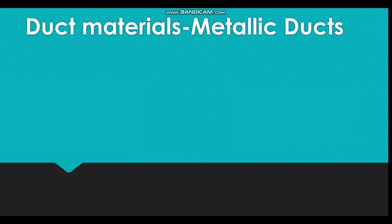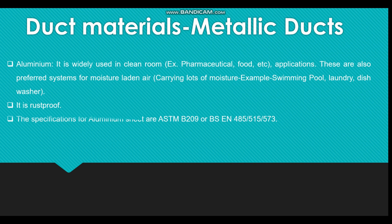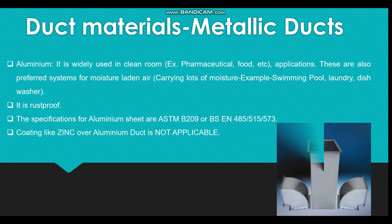The next duct mostly used in HVAC systems is the aluminium duct. It is widely used in clean rooms — for example, pharmaceutical and food applications. These are also preferred for moisture areas such as swimming pools, laundry areas, and dishwasher applications. It is a rust-proof duct, which is why it is mostly used in moisture-condensed areas. The British standard specification is BS EN 485, 515, and 573. Unlike galvanized steel, no zinc coating is required over the aluminium duct.